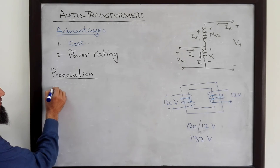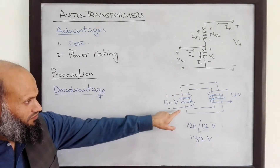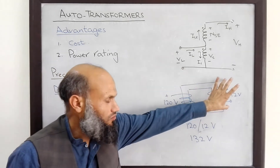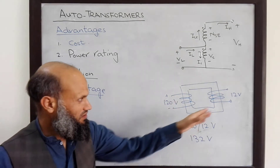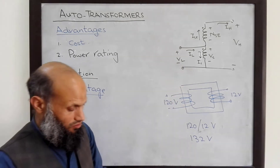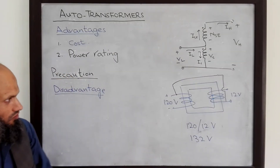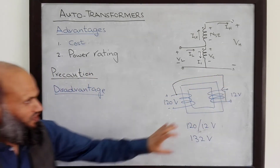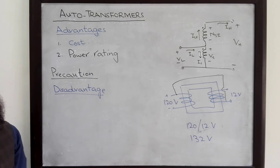There is a key disadvantage of an auto transformer. In a conventional transformer, there is no electrical connection between the primary and secondary windings, so high voltage and low voltage are electrically isolated from each other. If there is any noise on the primary side, it is not directly transmitted to the secondary side. However, in an auto transformer configuration, there is an electrical connection, so noise on the primary side will be transmitted to the secondary side. Therefore, with an auto transformer configuration, we lose electrical isolation.